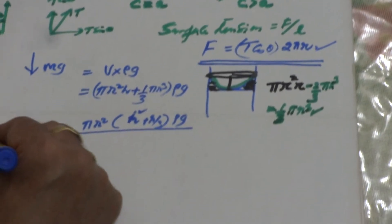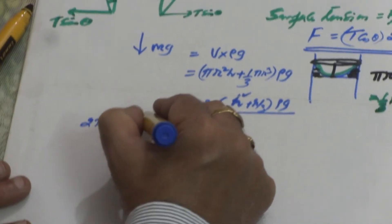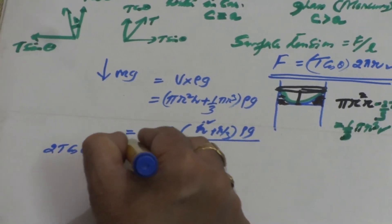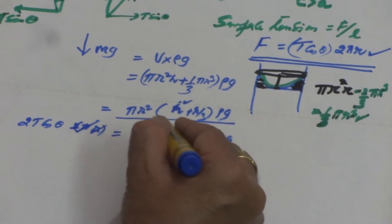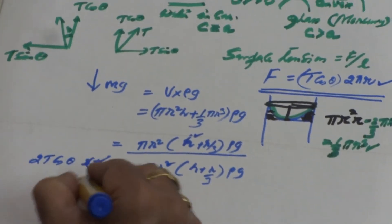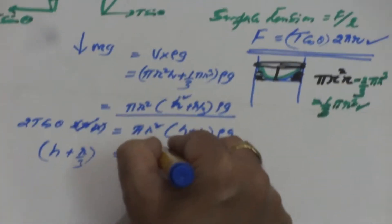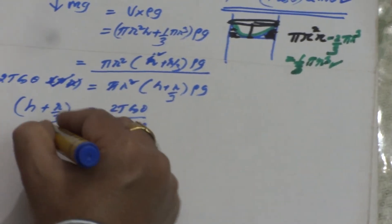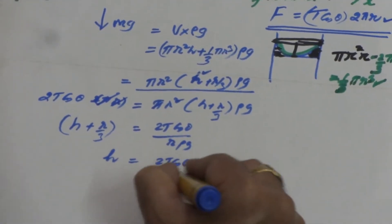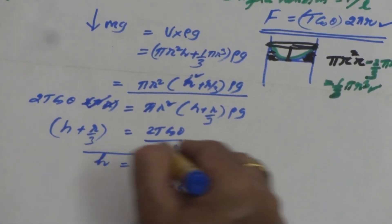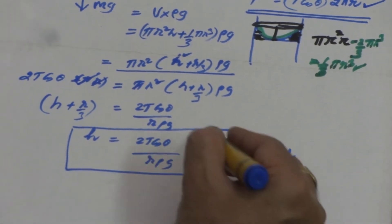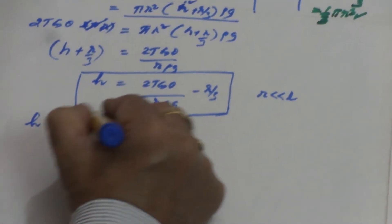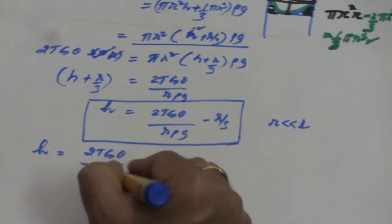Equating upward force to downward force: 2T cos theta × πr = πr²(h + r/3) × ρg. Cancelling π and one r: h + r/3 = 2T cos theta / (r × ρg). Therefore h = 2T cos theta / (rρg) − r/3. Since capillary tubes have a very small radius compared to their length, we can neglect the r/3 term, and finally write: h = 2T cos theta / (rρg).